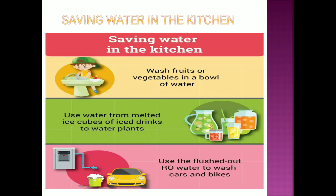Saving water in the kitchen: when you wash fruits and vegetables, don't wash them under a running tap. Wash them in a bowl instead. The leftover water can then be used in the garden. Use water from melted ice cubes to water plants. Also, use the flush-out RO waste water to wash your car or bike.